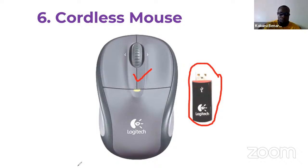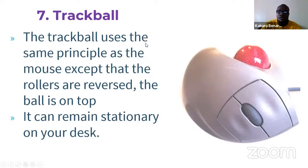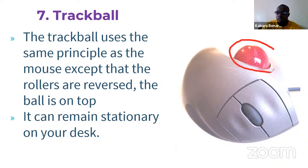The pointer moves on screen and other commands can be performed using the cordless mouse. Next is the trackball. The trackball uses the same principle as the mouse except that the rollers are reversed — the ball is on top and the device remains stationary on your desk. The user rolls the ball to move the pointer on screen, and clicking buttons and a scroll button are also available.